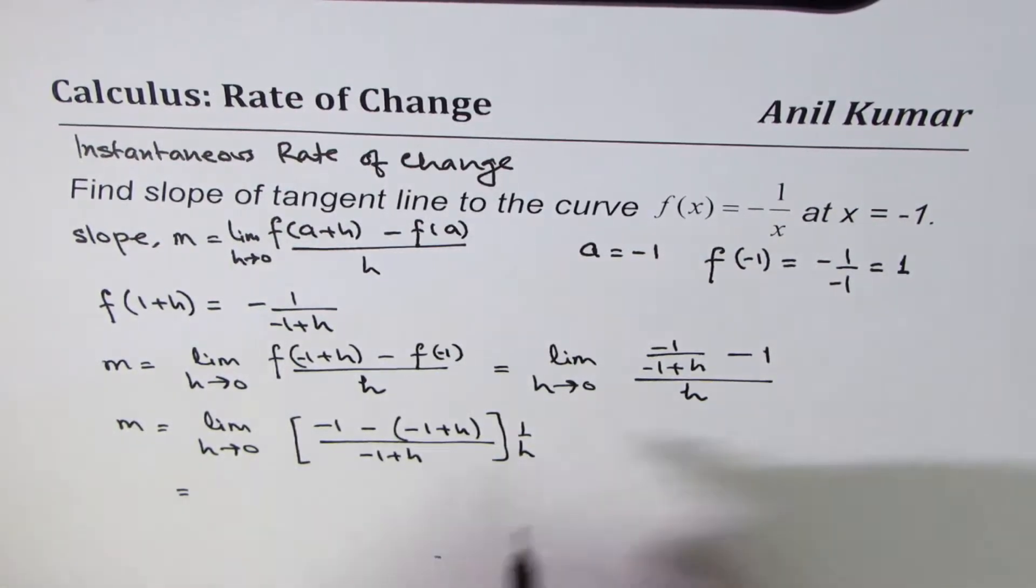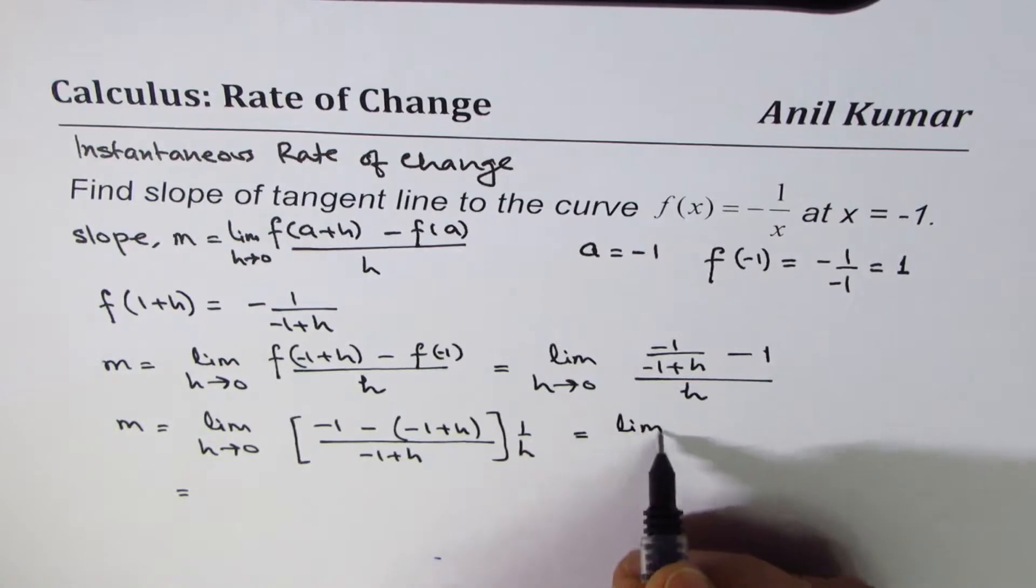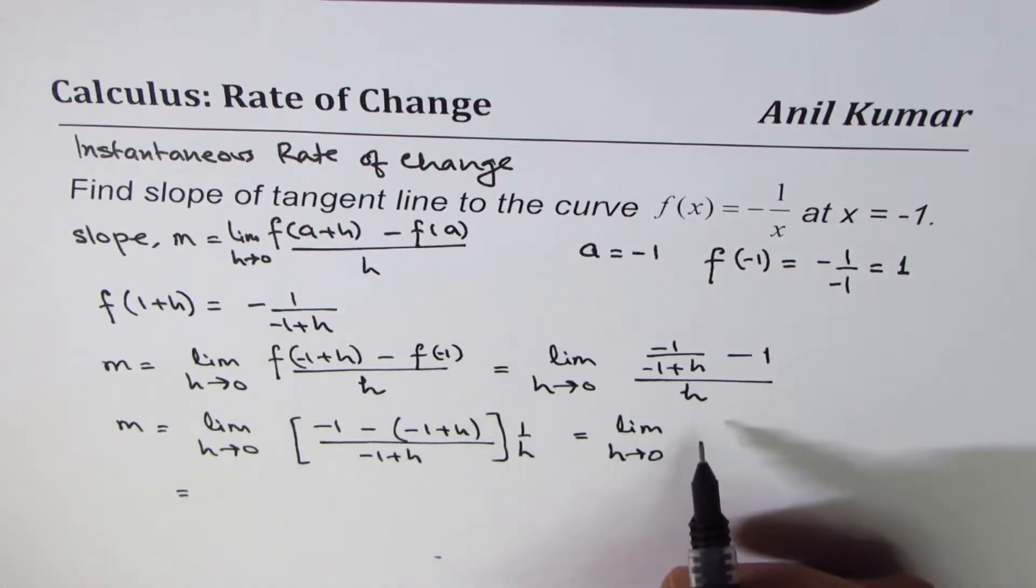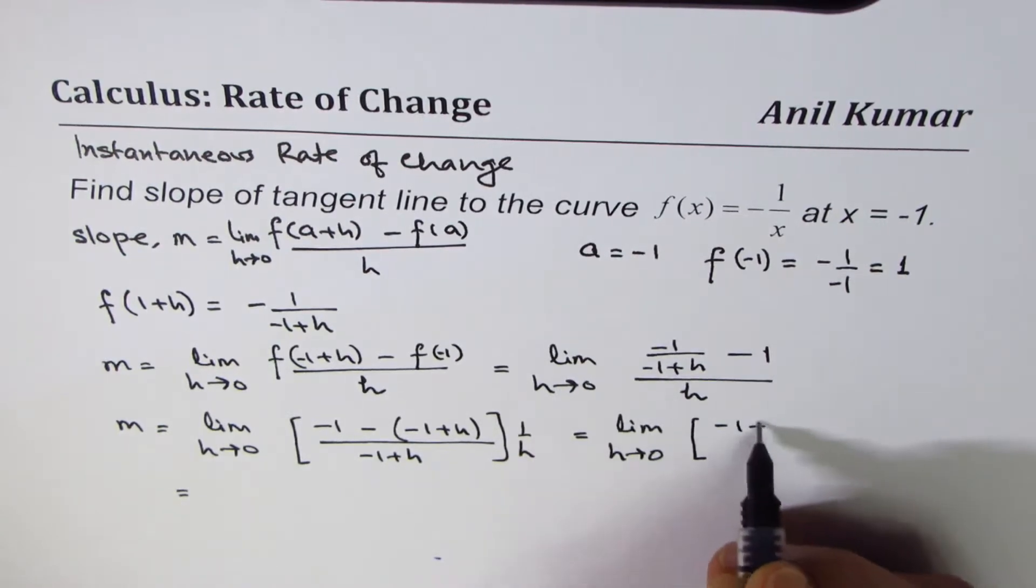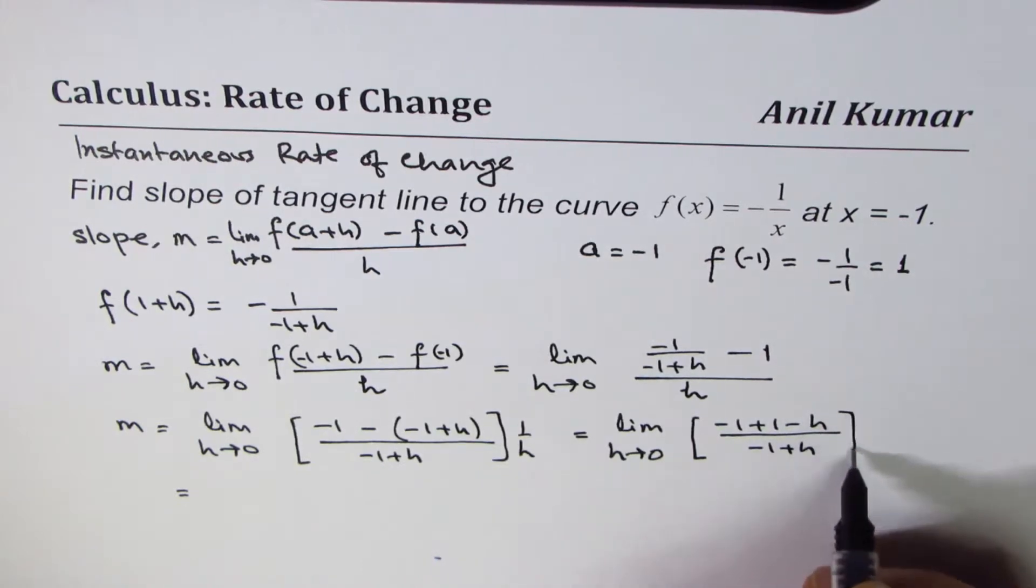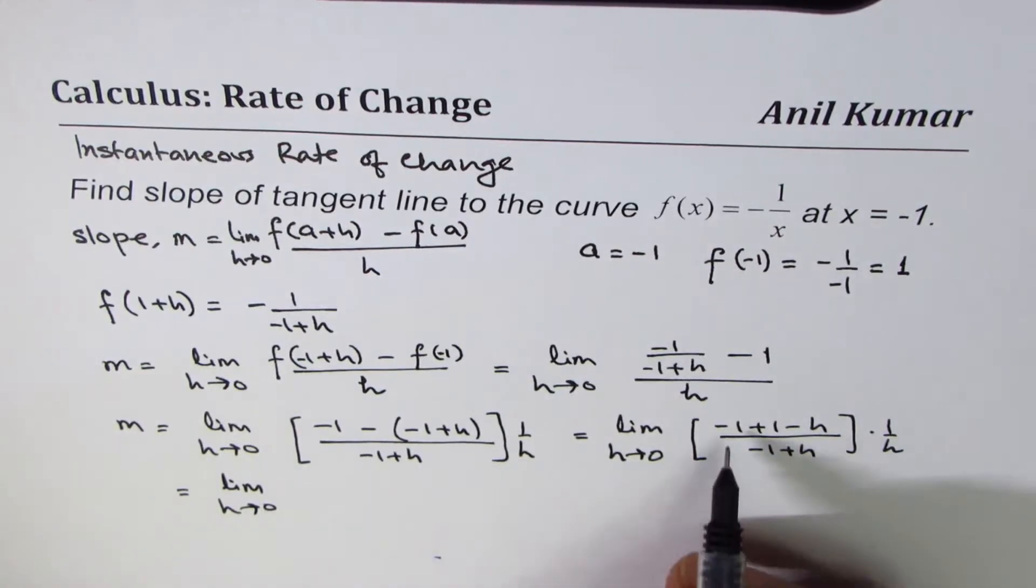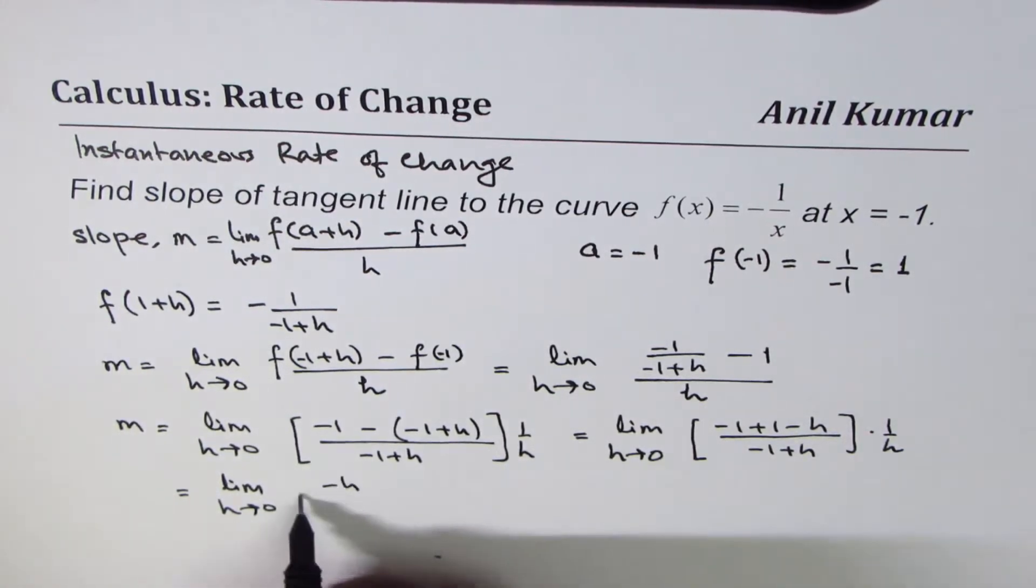So that could give us, limit h approaches 0, minus 1 minus minus 1 makes it 0. Let me do it in two steps. We get minus 1 plus 1 minus h over minus 1 plus h times 1 over h. So that gives us limit h approaches 0. Minus 1 plus 1 is 0. So we get minus h over minus 1 plus h times 1 over h.